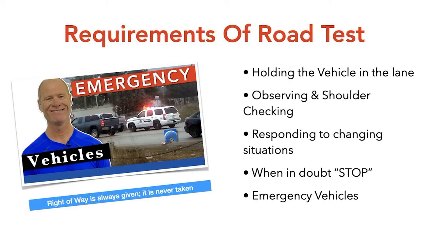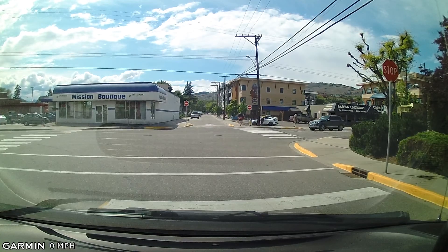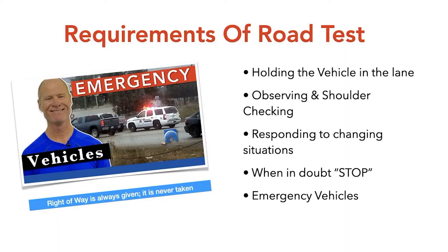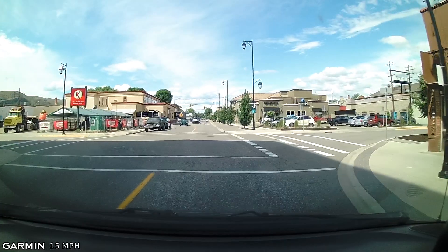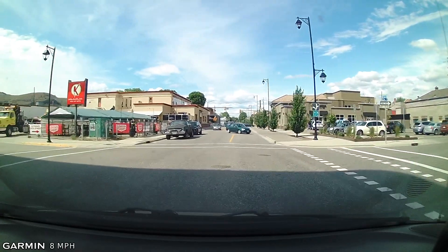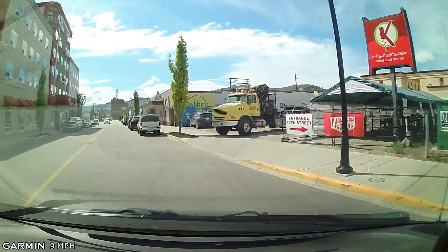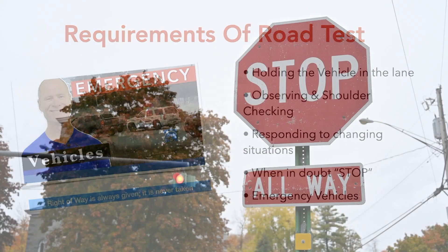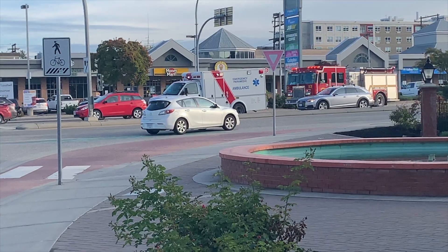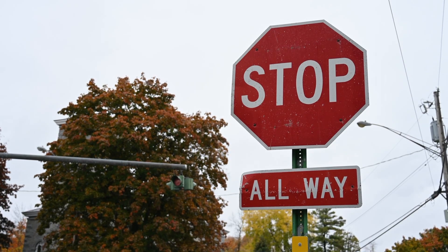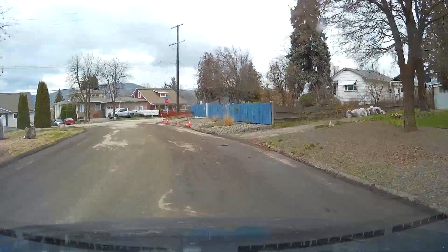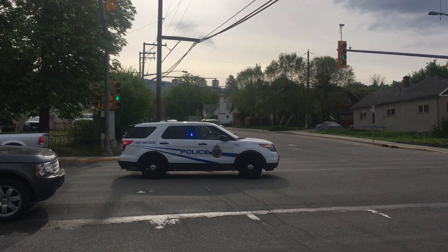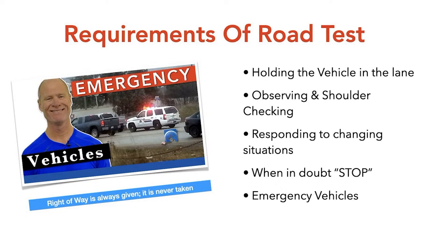Some of the skills required for the road test include holding the vehicle in the center of the lane, observing and shoulder checking every time you change direction, and responding — not reacting — to changing traffic situations. If you're in doubt in any traffic situation on your driver's test, simply stop. And know that the fly in the ointment of any driving test is emergency vehicles: if you do not come to a complete stop as soon as you see an emergency vehicle behind you or approaching from the front, that is an automatic fail. There's also a video on the top 10 reasons for automatic fails on a driver's test.